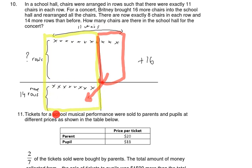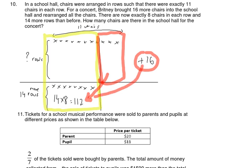How to find the number of chairs here? Kaden said 14 times 8. The number of chairs here is actually 14 times 8, which equals 112. Where did all these 112 chairs come from? It comes from here, plus the 16. So from 112, I subtract the 16 and I get 96. That means there are 96 chairs in this area.